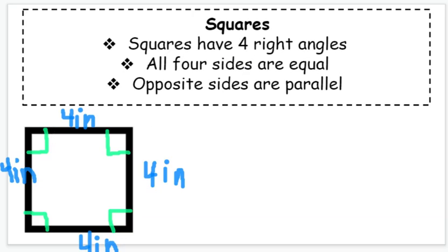Finally, the last property of a square is that opposite sides are parallel. Remember, parallel means they run forever and ever in one direction and they stay the same distance apart and they will never cross into each other.